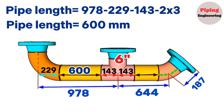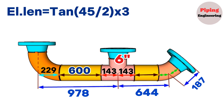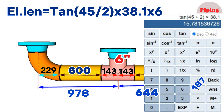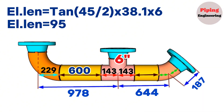With the same method we will calculate the second yellow color pipe length. For a 6-inch 45-degree elbow: tangent(45/2) × 38.1 × 6 = 95 millimeters. So the length of the 6-inch 45-degree elbow is 95 millimeters. We will write this 95-millimeter measurement in our pipeline.